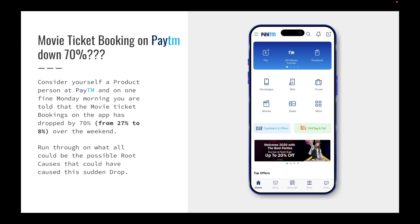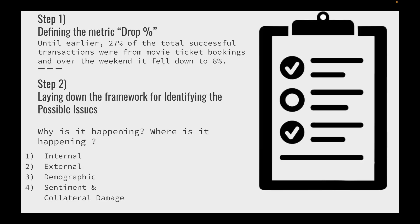So what do we do first? You'll have to clarify what the question is asking. You can ask clarifying questions if you are not sure. My clarifying question would be: what does the drop percentage mean? Until earlier, 27% of total successful transactions were from movie ticket bookings, and over the weekend it fell to 8%.